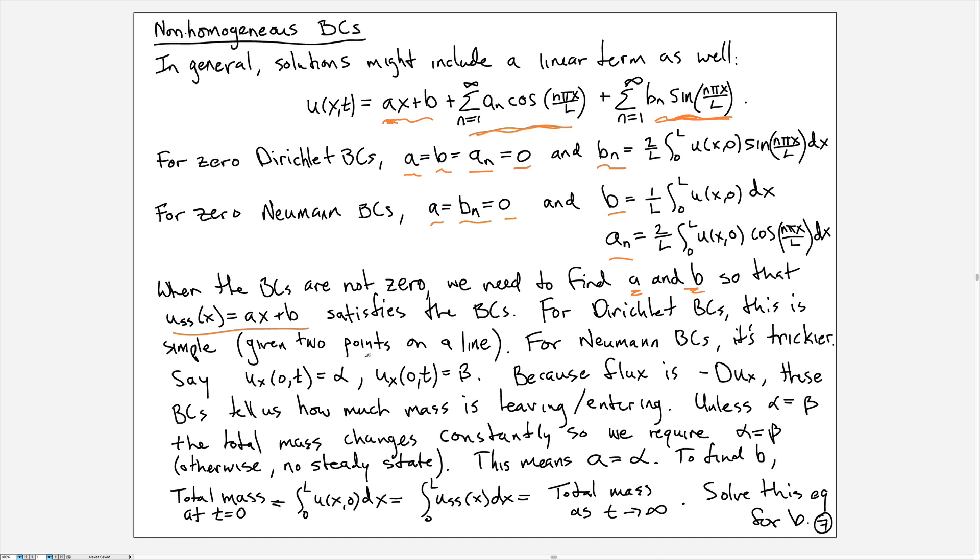For Neumann boundary conditions, it's a little bit more complicated. If your boundary conditions require that the slope at the origin be equal to alpha and require that the slope at L be beta...